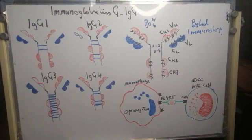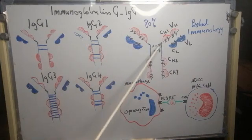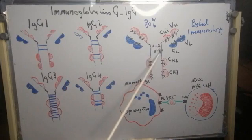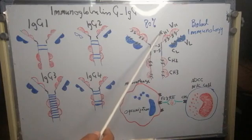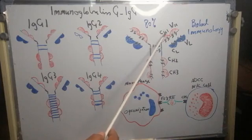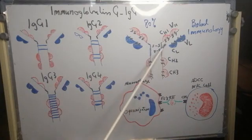As can be seen here, the subclasses differ in the size of the hinge region. The hinge region is the angle between the constant region of heavy chain number one and the constant region of heavy chain number two.